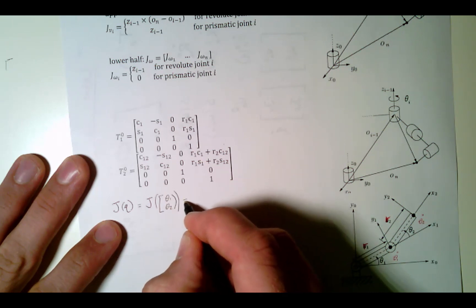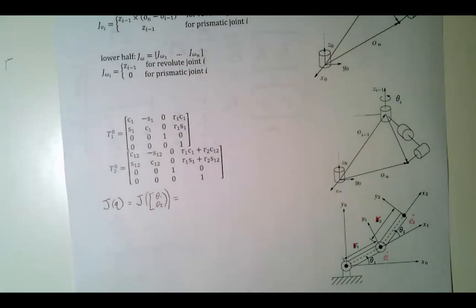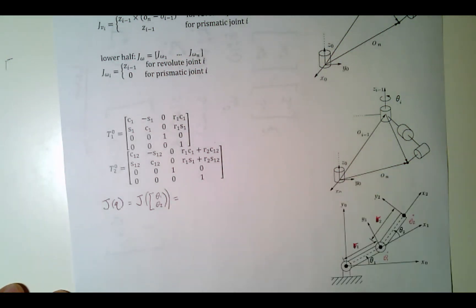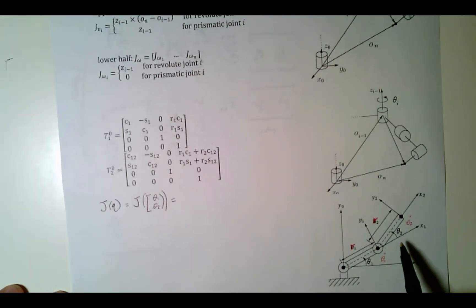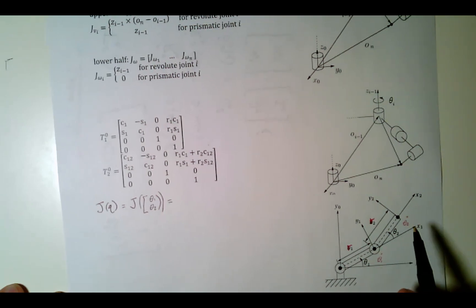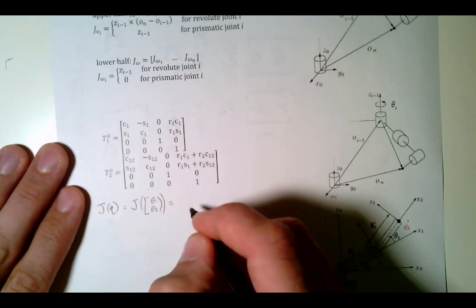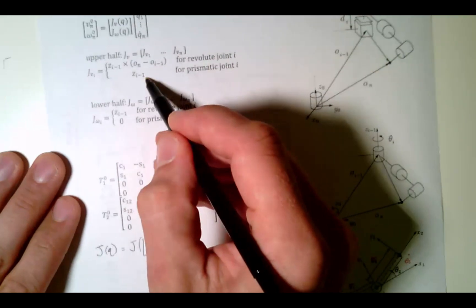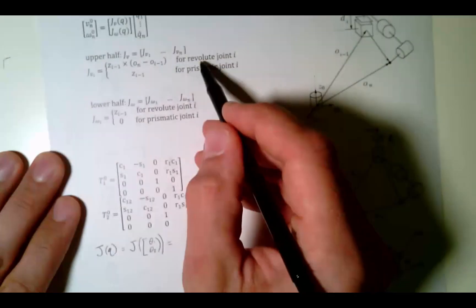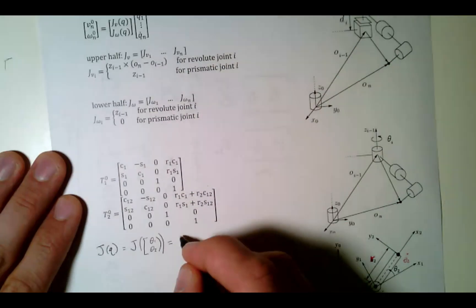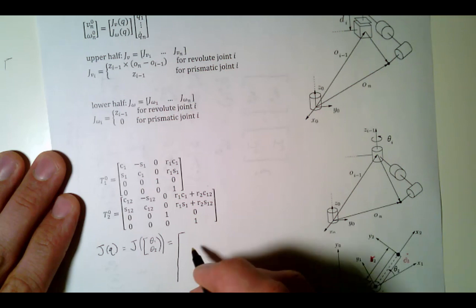That is equal to a matrix that has six rows and two columns, because a rigid body has six degrees of freedom. We have a revolute joint for each of these, so we're going to be able to write that out.